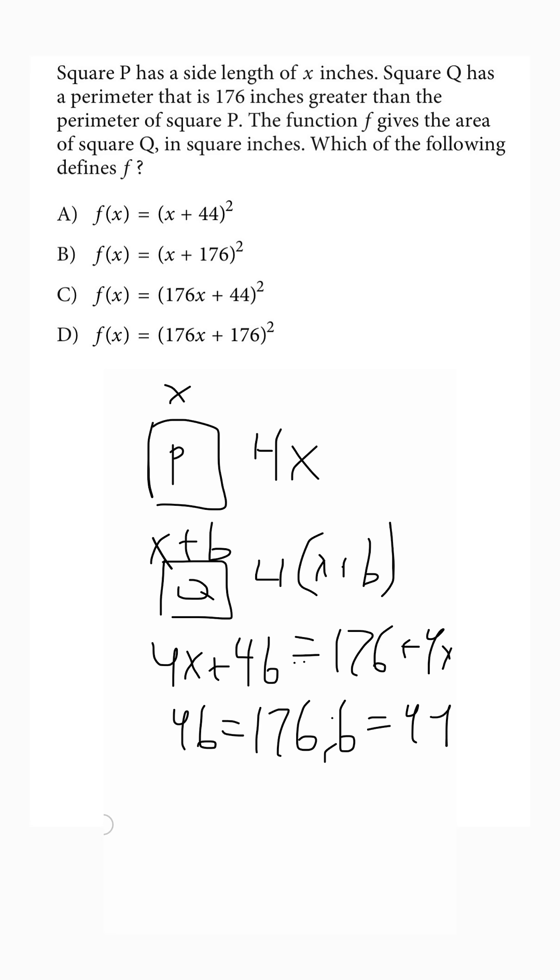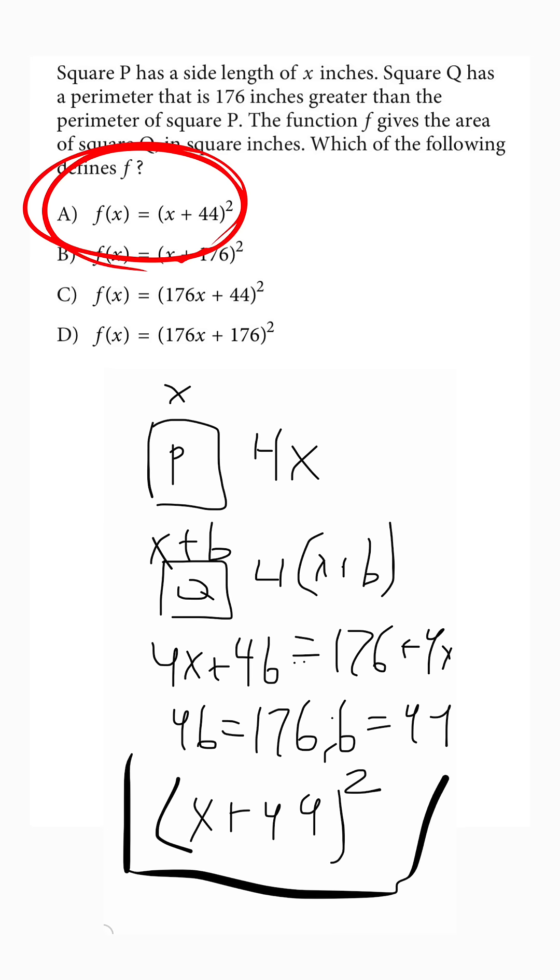Finally, let's substitute this back into our side length for Q. We know the area of a square would just be our side length squared, so (x plus 44) squared. So finally, our answer would be A.